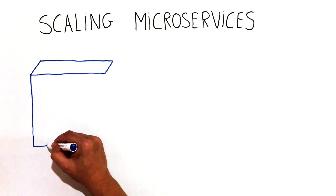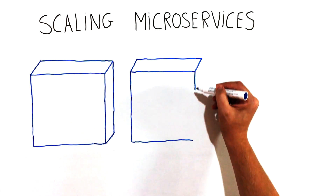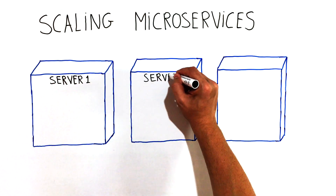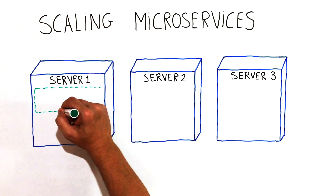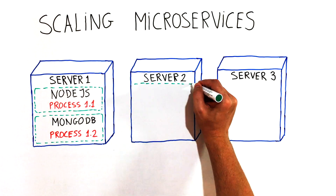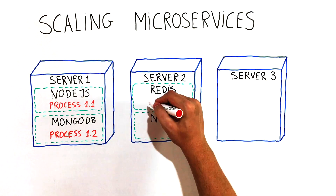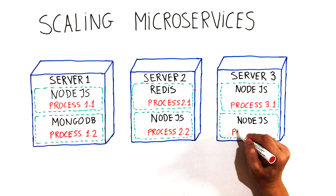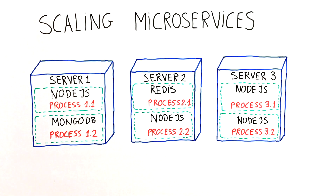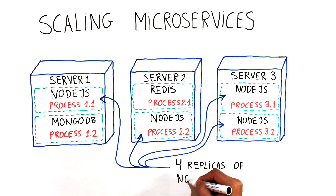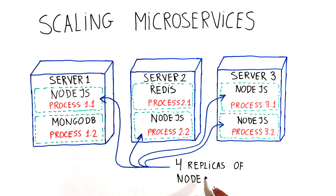In a microservices architecture, you have the option of scaling only those services that require more resources, while leaving others at their original scale. Splitting a monolithic application into microservices allows you to horizontally scale the parts that allow scaling out, and scale the parts that don't vertically instead of horizontally.